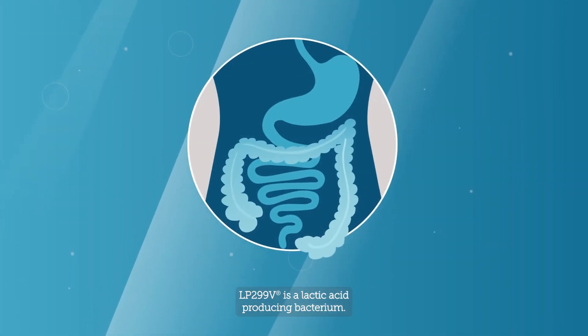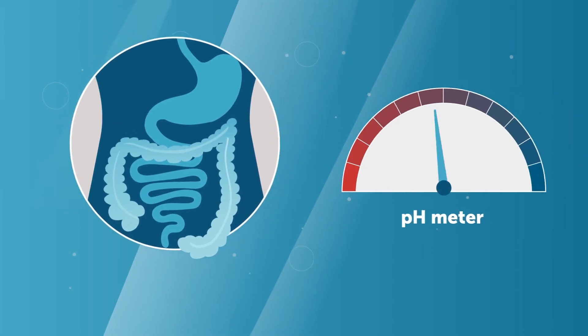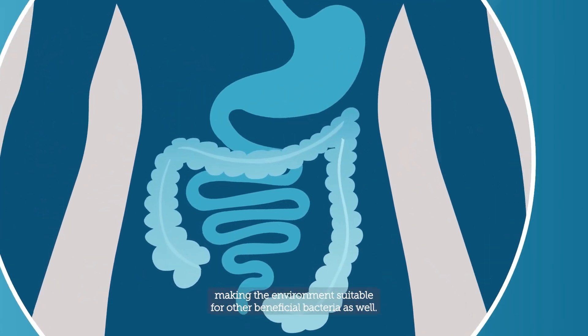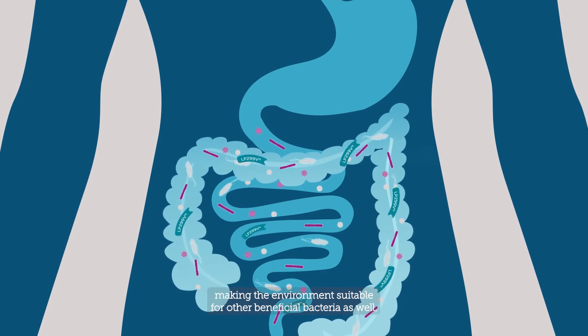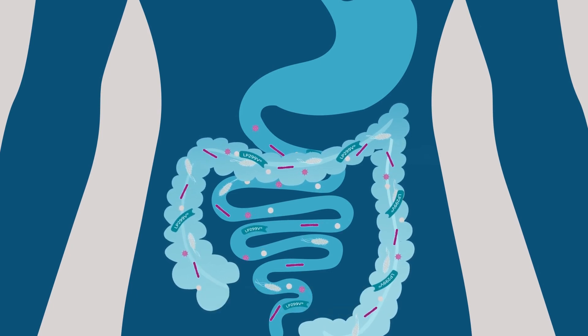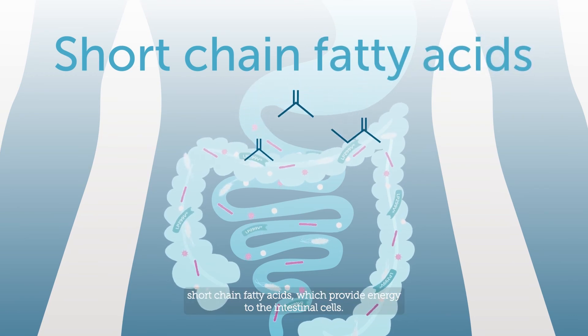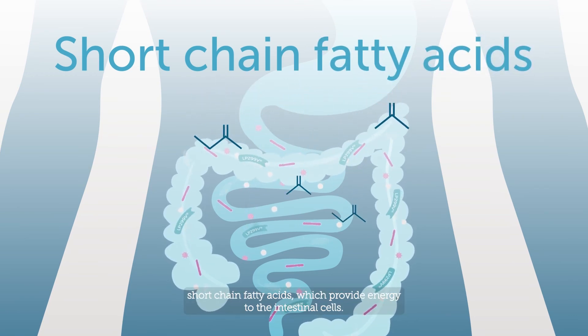LP299V is a lactic acid producing bacterium. Lactic acid lowers the pH in the intestinal lumen, making the environment suitable for other beneficial bacteria as well. Lactic acid is also a precursor to short-chain fatty acids, which provide energy to the intestinal cells.